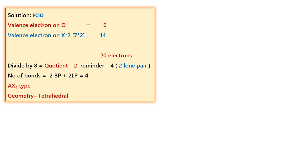Let us take FClO first. In FClO, F, Cl, and O are the three elements that are involved. The valence electrons are counted. Oxygen has a valence electron of 6. The halogens have a valence electron of 7. There are two halogens, so it adds up to 14. The total number of valence electrons on this particular molecule is 20.